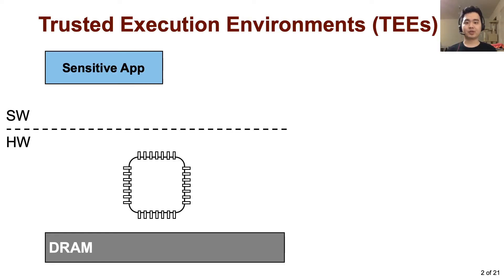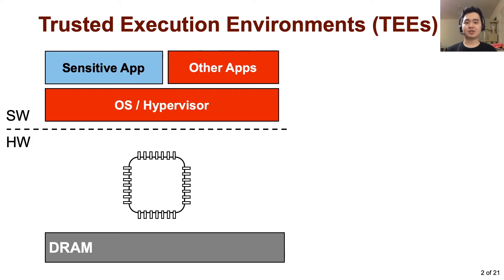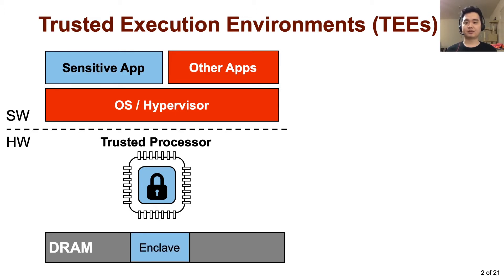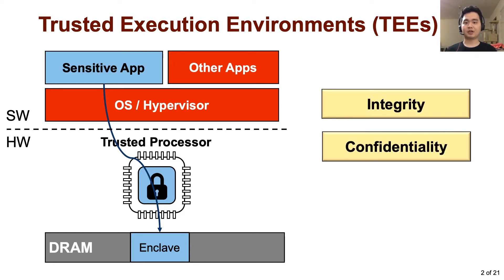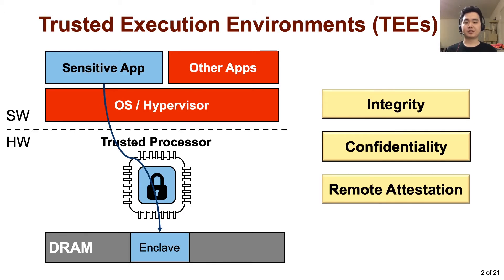Trusted execution environment protects a sensitive application from other applications on a system, or even from privileged software such as the operating system or hypervisor. The protection is enforced by trusted hardware, which creates a protected memory region often called an enclave. The code and data of the application reside inside the enclave, and hardware guarantees the integrity and confidentiality of the program execution. Also, the hardware can cryptographically attest that the enclave is correctly initialized and is running on legitimate hardware.